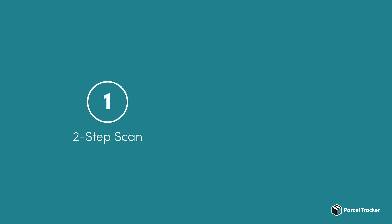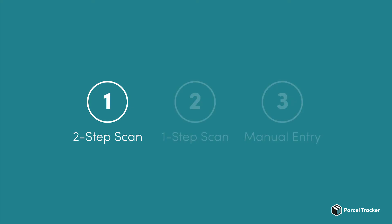There are three ways to log in parcels – the two-step scan mode, the one-step scan mode, and manual entry. Let's start with the default two-step scan mode.